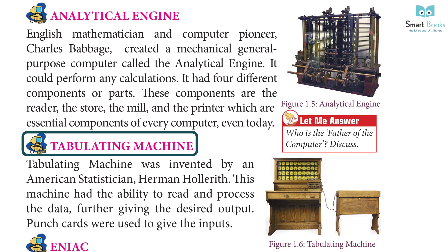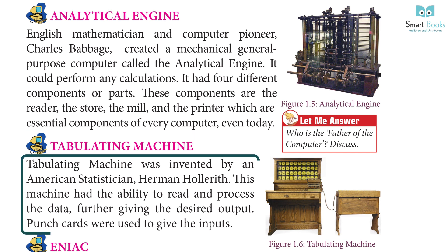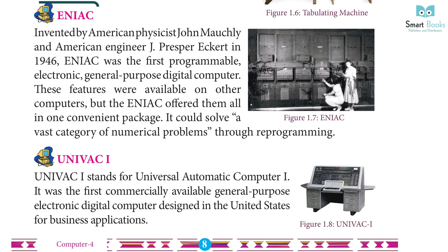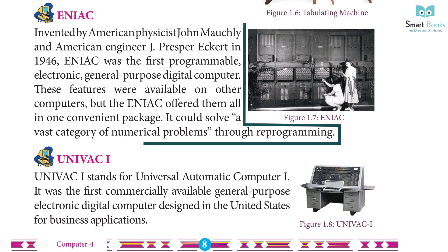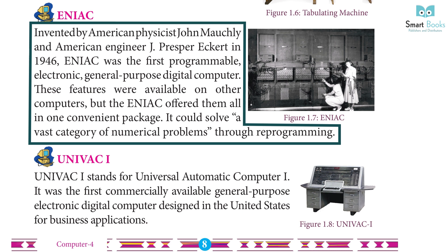Tabulating Machine: The Tabulating Machine was invented by American statistician Herman Hollerith. This machine had the ability to read and process data, giving the desired output. Punch cards were used to give the inputs. ENIAC was invented by American physicist John Mauchly and American engineer J. Presper Eckert in 1946.